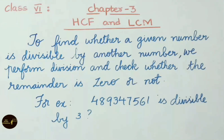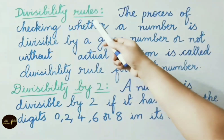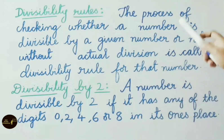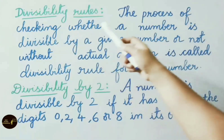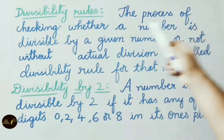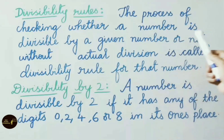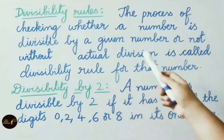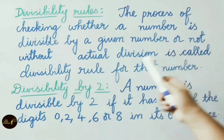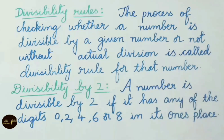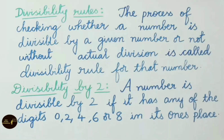Now let us see what is a divisibility rule. The process of checking whether a number is divisible by a given number or not without actual division is called a divisibility rule for that number. That means to verify whether a given number is divisible by a particular number or not without doing division, we can say by following divisibility rules.